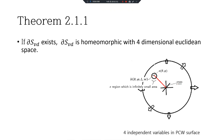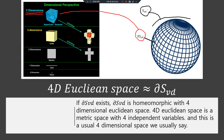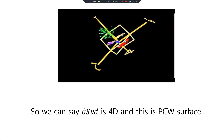Sphere 2.1.1: If DSVD exists, DSVD is homeomorphic to 4D Euclidean Space. 4D Euclidean Space is a metric space with 4 independent variables — the usual 4D Euclidean Space we refer to. So we can say DSVD is 4-dimensional, and this is PCW Surface.